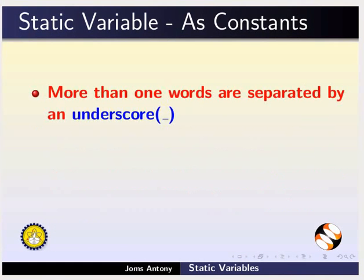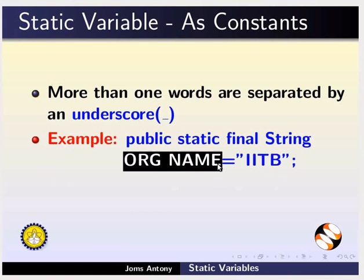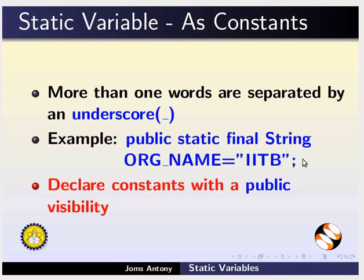If the name is composed of more than one word, the words are separated by an underscore. As an example, if all the students are getting enrolled to the same organization, say IITB, it can be represented by using a constant static variable, say ORG underscore name. Usually, we declare such constants with the public visibility.